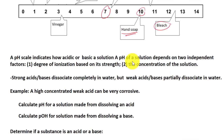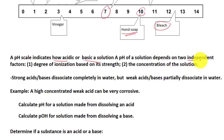The pH of a solution depends on two independent factors. The first one is the degree of ionization based on its strength — either strong or weak. A weak acid would dissociate very little.